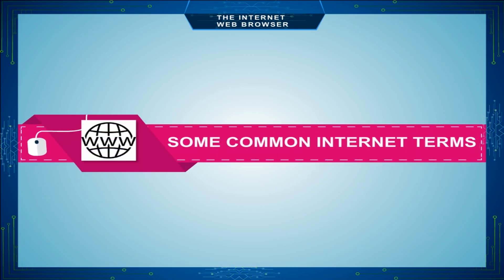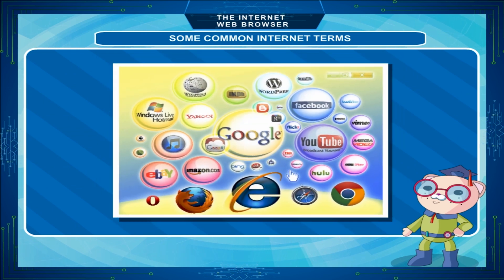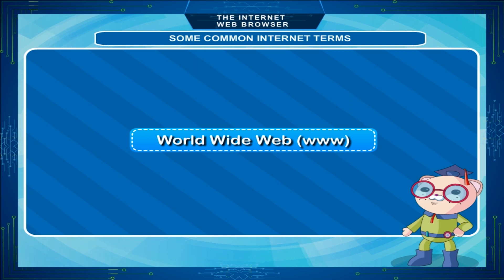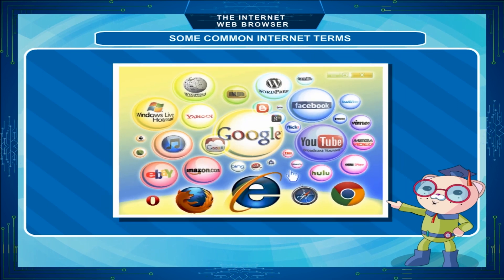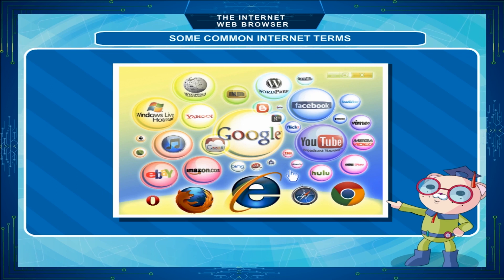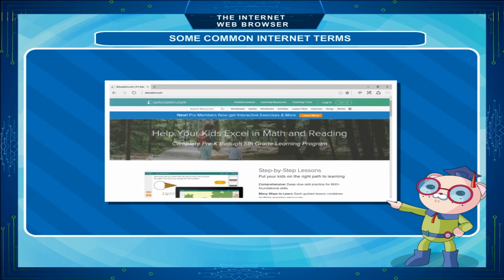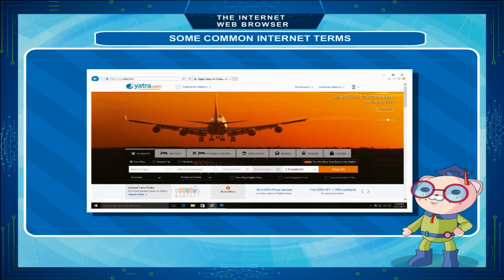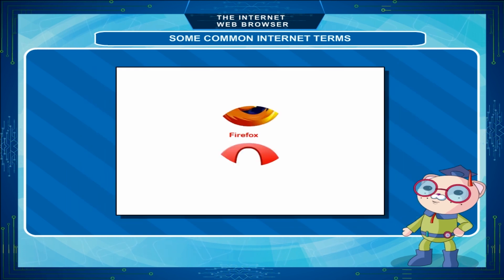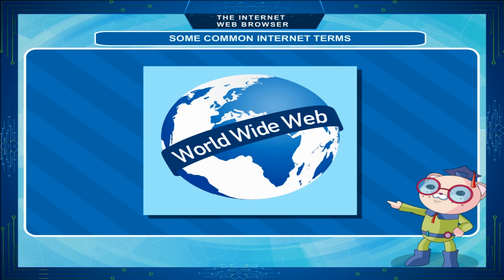Some common internet terms. When we are using the internet, we come across several terms. Let us learn some of them. World Wide Web: The World Wide Web is a system for finding information on the internet. It is a collection of web pages which provide information on a whole range of topics like education, sports, music, entertainment, travel, etc. The information stored in the form of web pages can be accessed and used with the help of internet browsers.